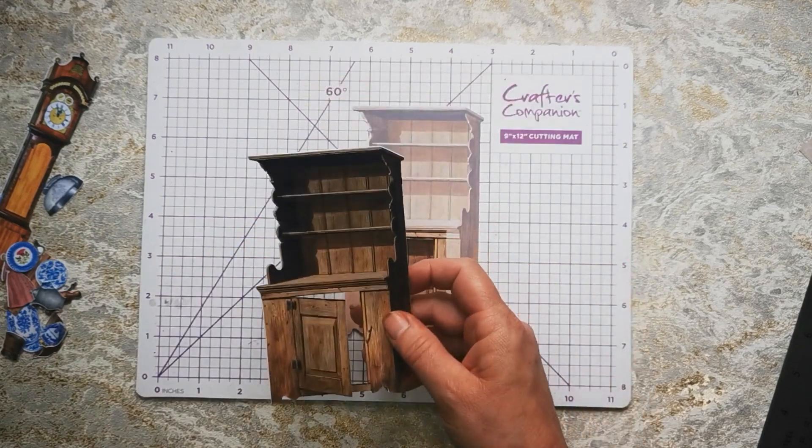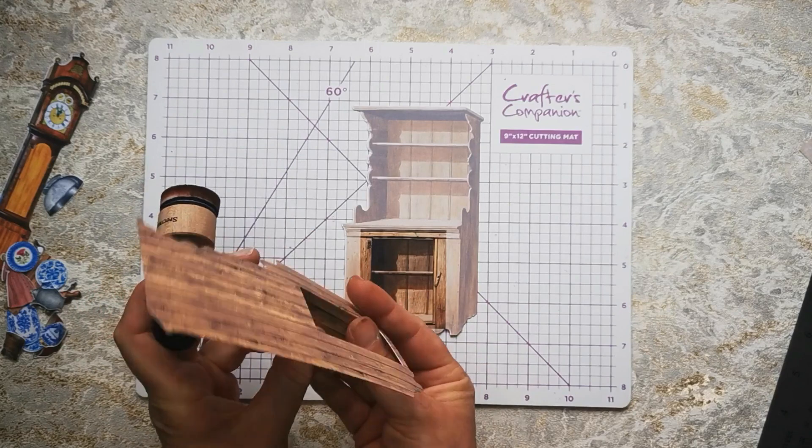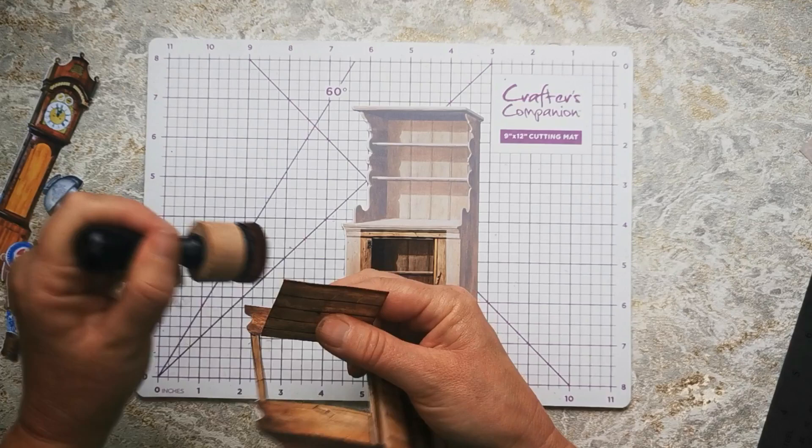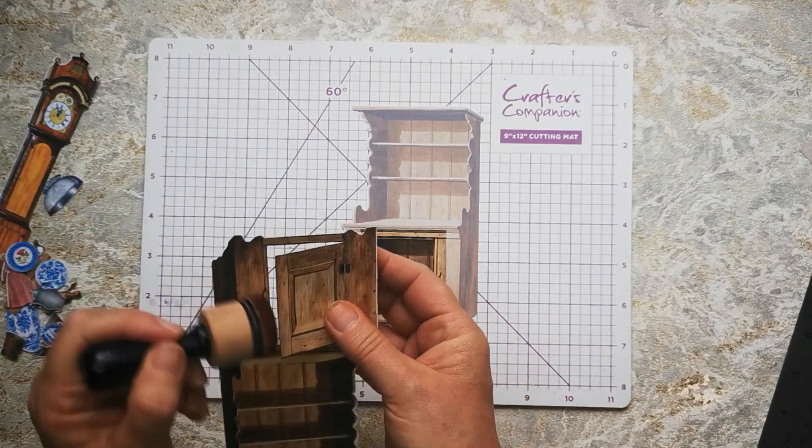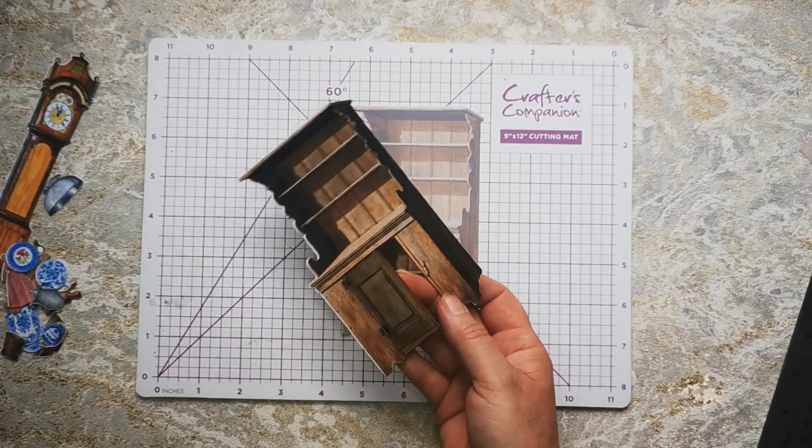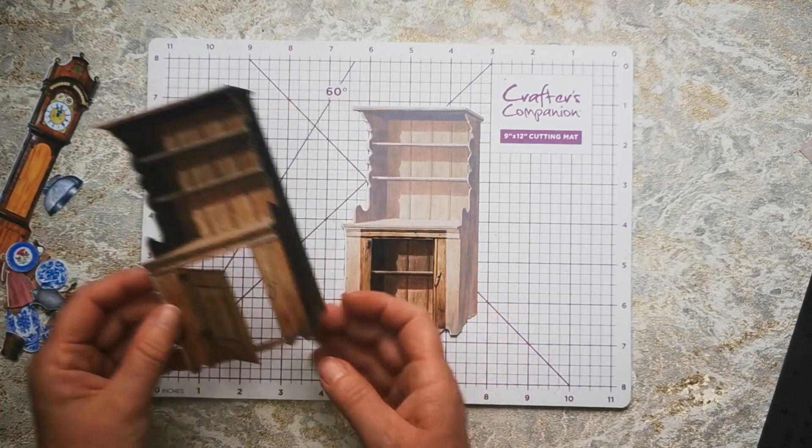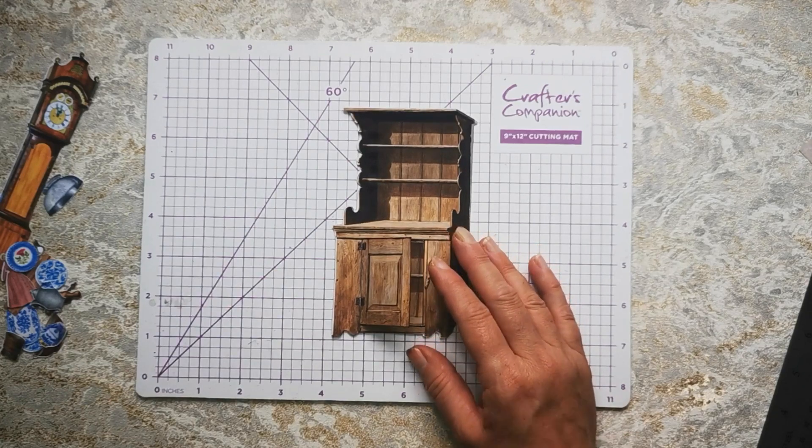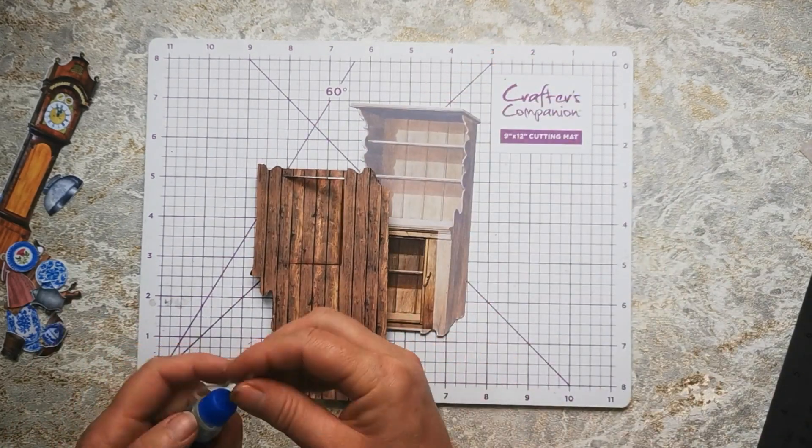So I'm just going to go ahead and ink the edges of the door. I can ink the dresser as a whole when it's stuck together, but for now I'll just do these door edges to get rid of that white edge that you see on the paper. So there we go, we can now go ahead and glue this together.